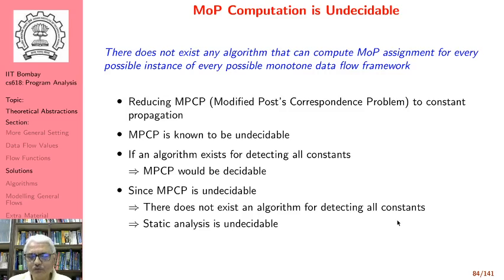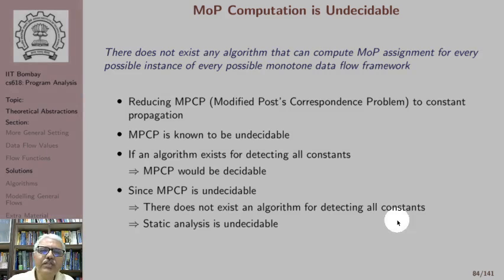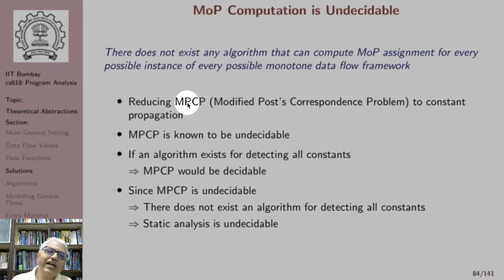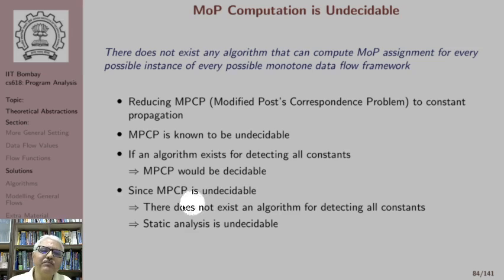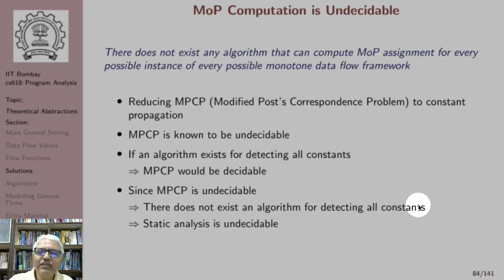Formally, the argument that MOP computation is undecidable is made by reducing MPCP — the Modified Post Correspondence Problem — to constant propagation. This means we can model MPCP as a constant propagation problem, so a solution to constant propagation translates into a solution to MPCP. Since MPCP is known to be undecidable, no algorithm can detect all constants, meaning constant propagation and in general static analysis is undecidable.